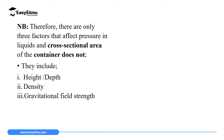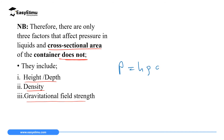There are only three factors that affect pressure in liquids. The cross-sectional area of the container is not one of them. The first factor is height or depth, the second is density, and the third is gravitational field strength. The formula is: pressure equals h times rho times g, where h is height, rho is density, and g is the gravitational constant. These are the only factors which affect pressure in fluids.